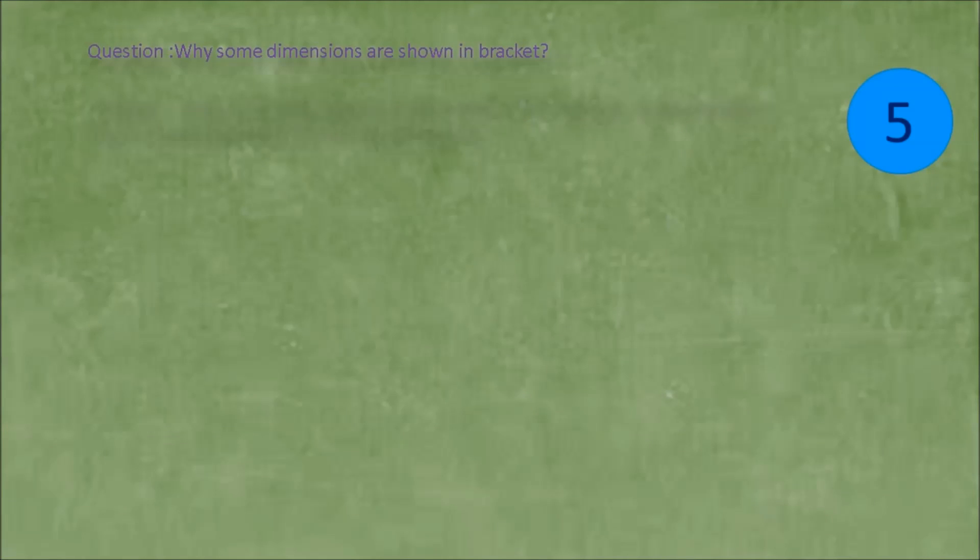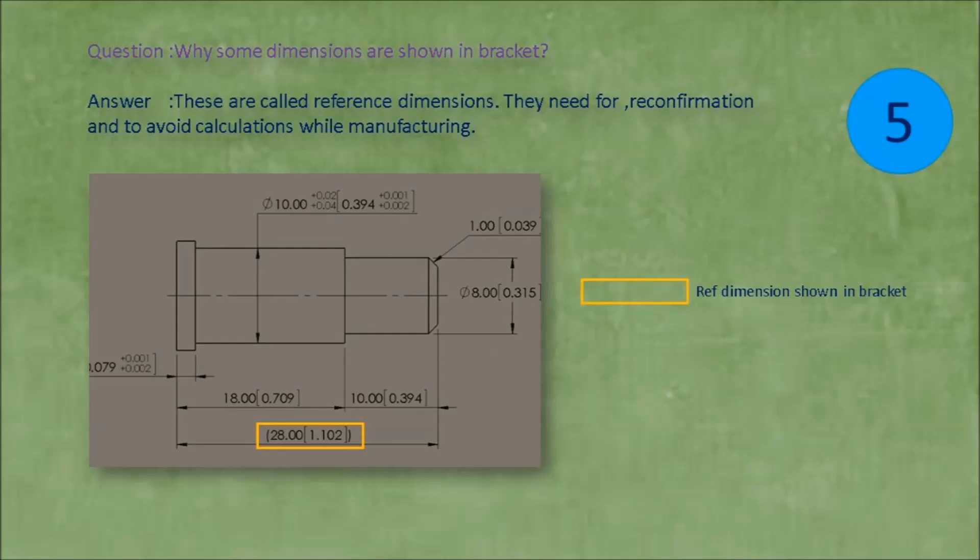Question: Why some dimensions are shown in bracket? Answer: These are called reference dimensions. They are needed for reconfirmation and to avoid calculations while manufacturing.